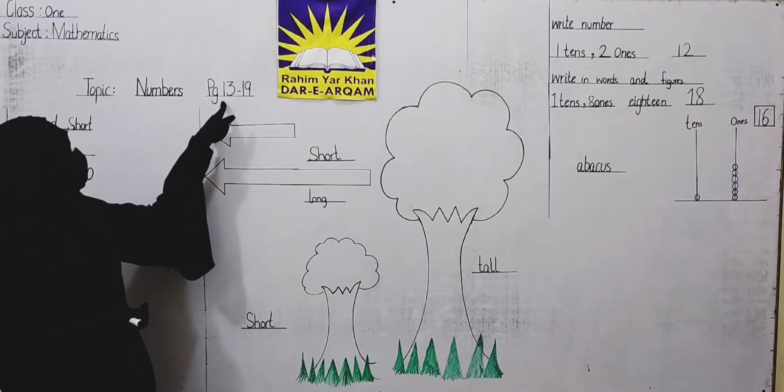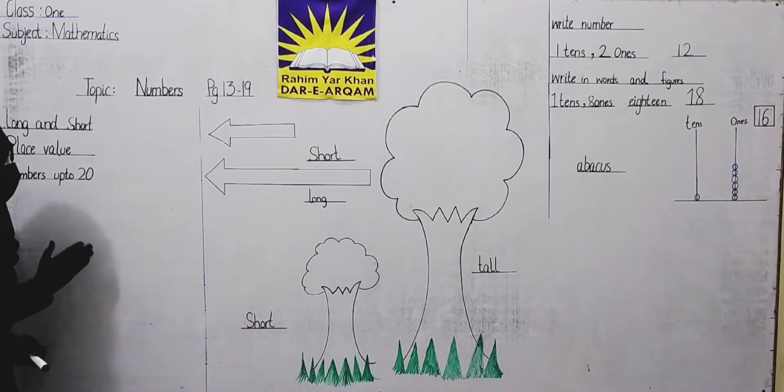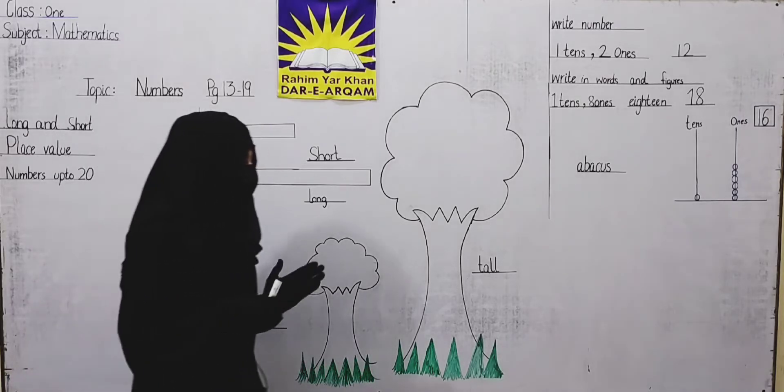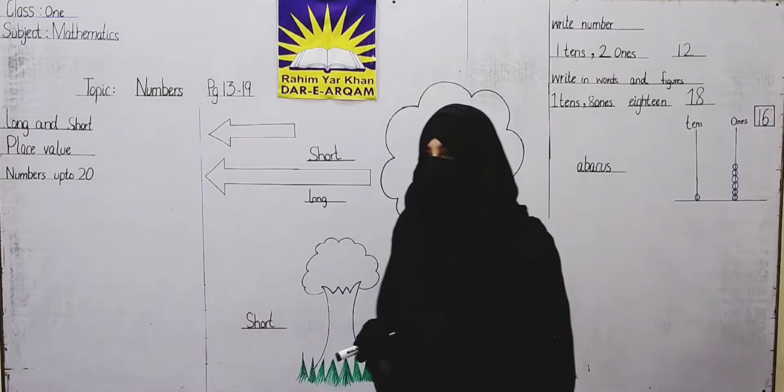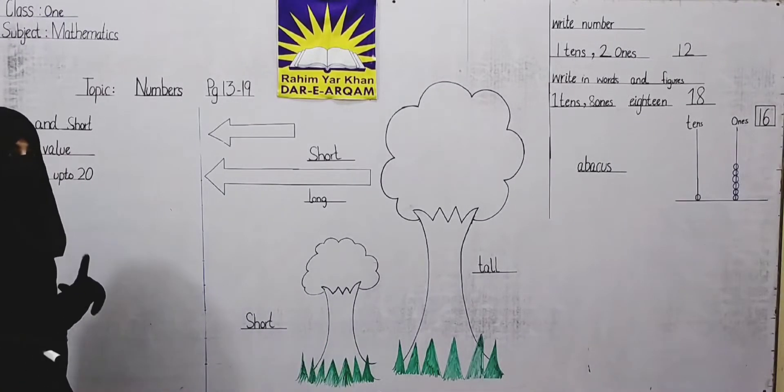Today we will learn numbers 13-19. We will learn long and short concept, tall and short concept, and place value. We will learn numbers up to 20.